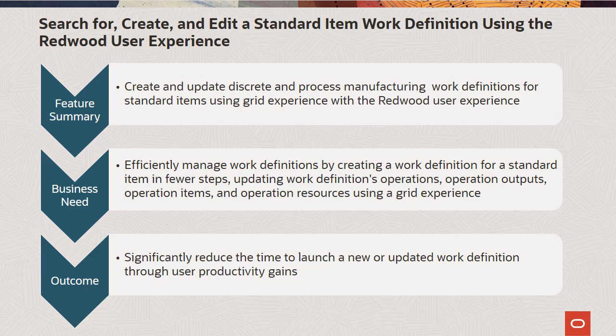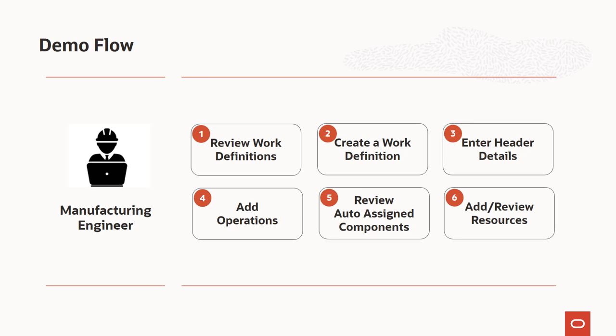Through user productivity gains. This is the high-level demo flow. After logging in as a manufacturing engineer in work definitions user experience, we will see a list of work definitions where the user can take several actions. Then we will create a work definition by entering the header details, add operations, review the auto-assigned components of the work definition operation items, and manually add components to work definition operations. Finally, we will review the resources and add resources to work definition operations. In addition, we will also review guided journey enabled in work definitions.